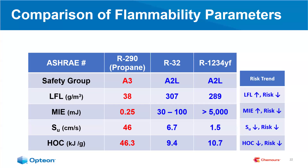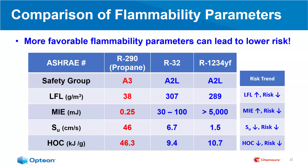Once you do get an ignition, you want to look at the severity by examining burning velocity and heat of combustion. For A2Ls, these values are much lower than R-290. The burning velocity of propane is 46 centimeters per second — it propagates very quickly — but for A2Ls, values are less than 10 centimeters per second, which you can walk faster than. The heats of combustion of an A3 are also much higher than those of an A2L. Together, lower burning velocities and lower heats of combustion contribute to lower risk. The more favorable flammability parameters of A2Ls help minimize the risk of moving to a flammable refrigerant.